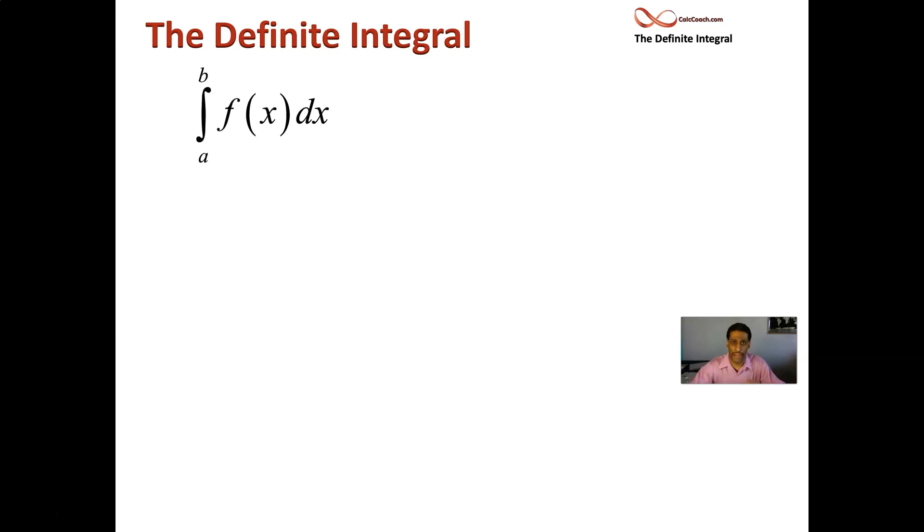So we have a set of symbols here. We have to break down exactly what each piece means and how you find it. So what this represents, first off, is the exact area under the graph of f of x above the x-axis between x equals a and x equals b.